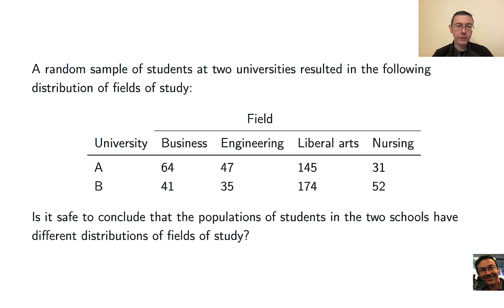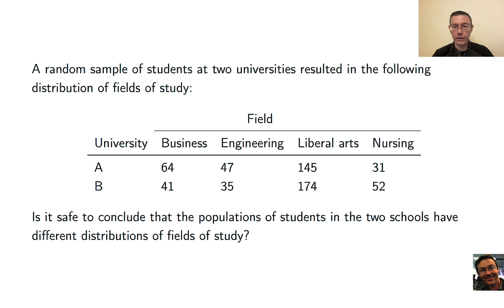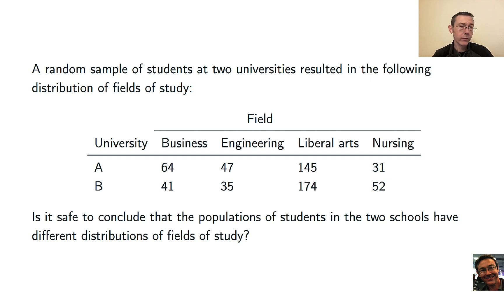I'm going to work through a couple of examples. Here's the first one. We have two random samples of students at two universities and we've asked them what college they are in — whether their overall field of study falls under the College of Business, Engineering, Liberal Arts, or Nursing. The results from these two universities were different, as we would expect if the two universities were not exactly the same.